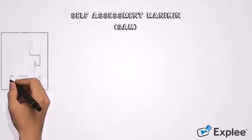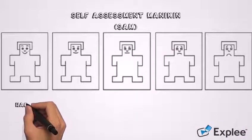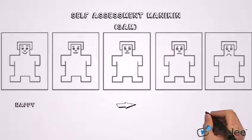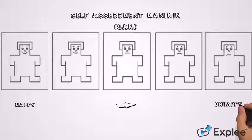This pleasure scale consists of 5 pictograms, ranging from a smiling happy figure to a frowning unhappy one. After seeing each picture, the participants had to rate their pleasure by choosing one of the pictograms in the scale.